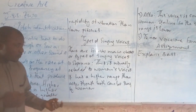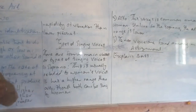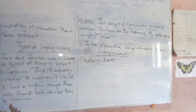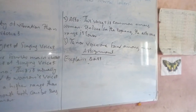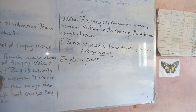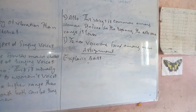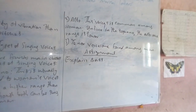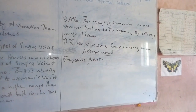The Soprano and the Alto — they are women's voices. These two types of singing voices are similar because they are women's voices. So the Alto: these voices are common among women.